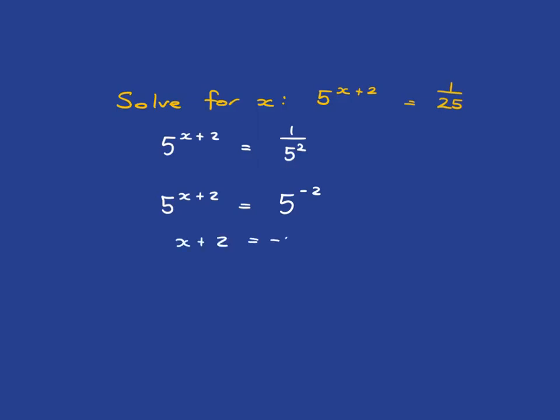Next step. x plus 2 is negative 2. And then final step. It's negative 2 subtract 2, which is negative 4.